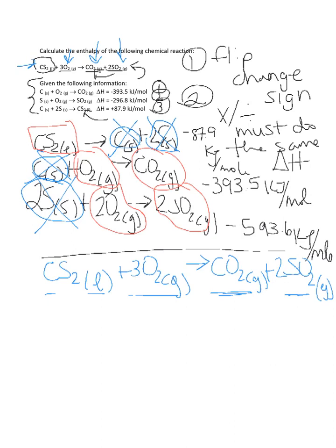Now to determine the enthalpy change for this reaction, we must also add up the 3 enthalpies. So we had negative 87.9 plus negative 393.5 plus negative 593.6 gives us a total of negative 1075 kilojoules per mole.